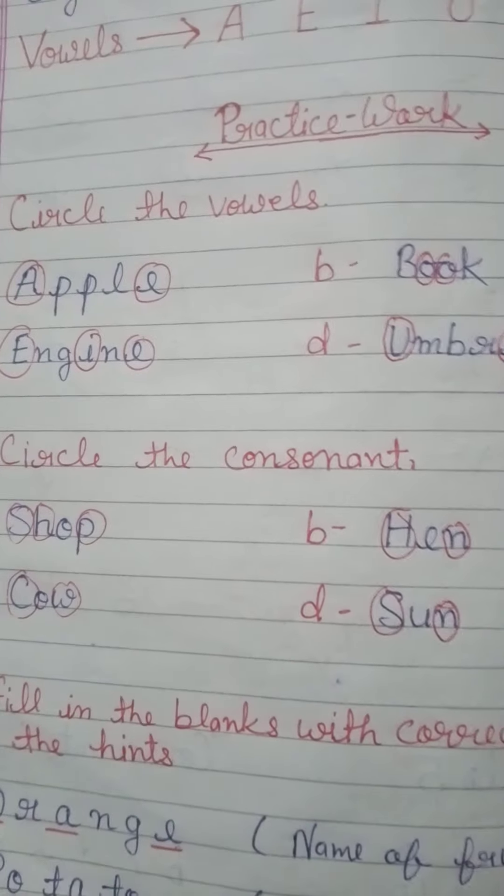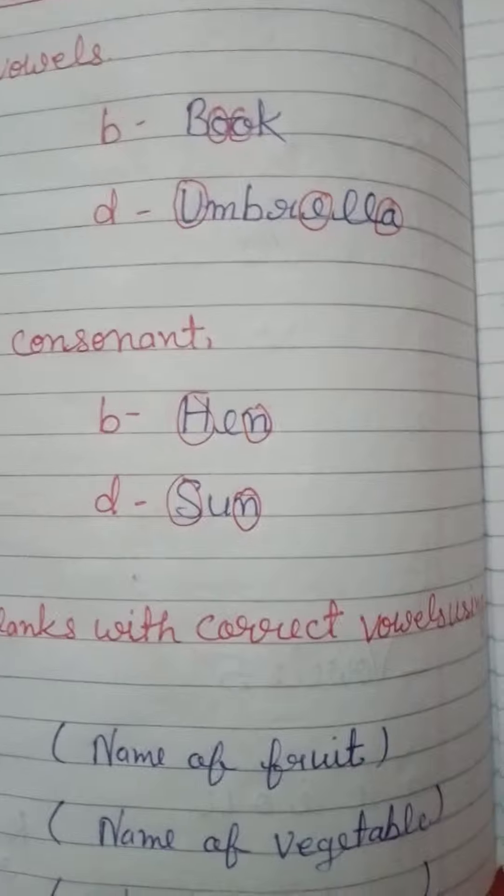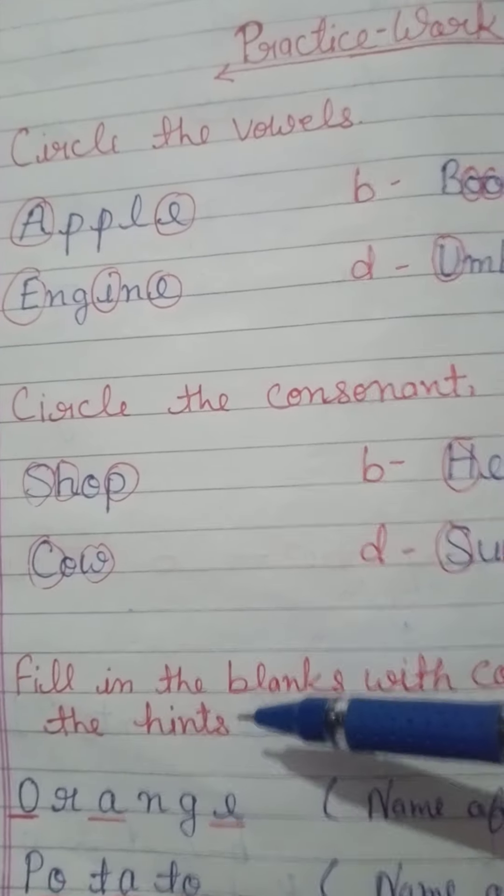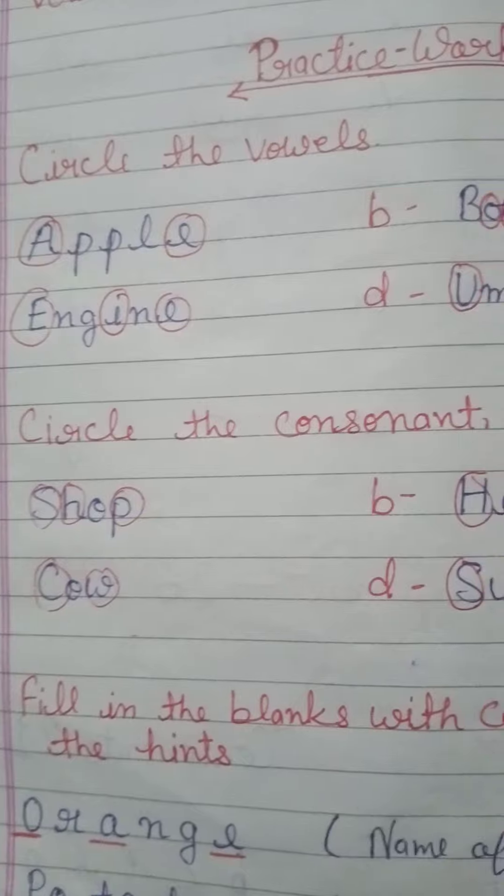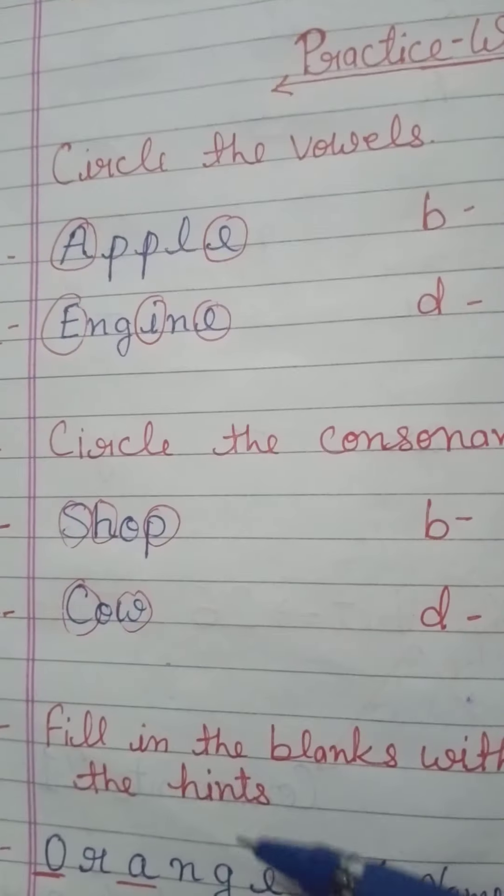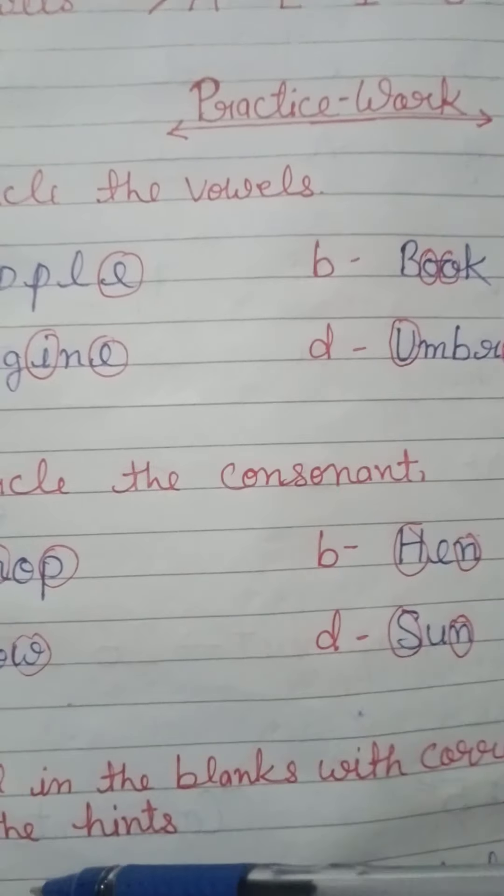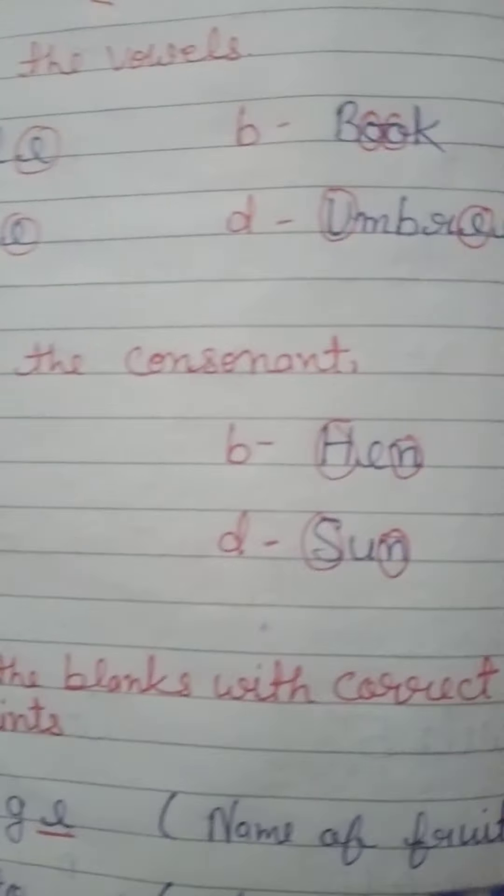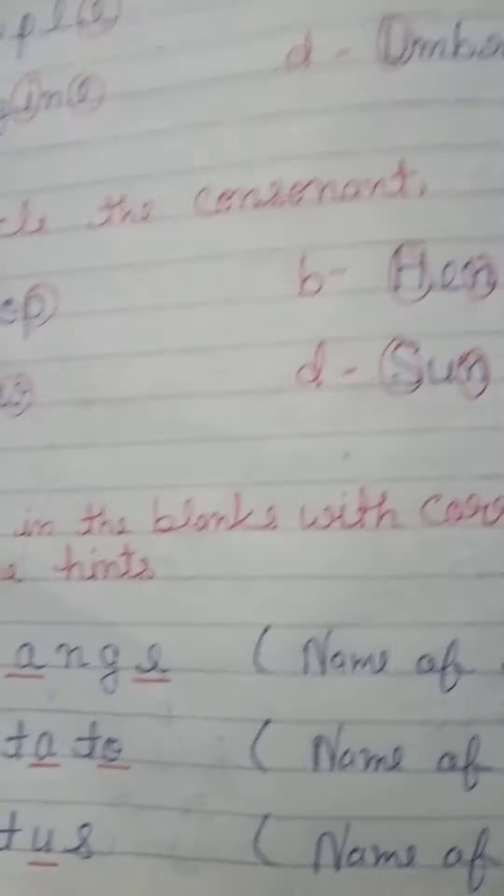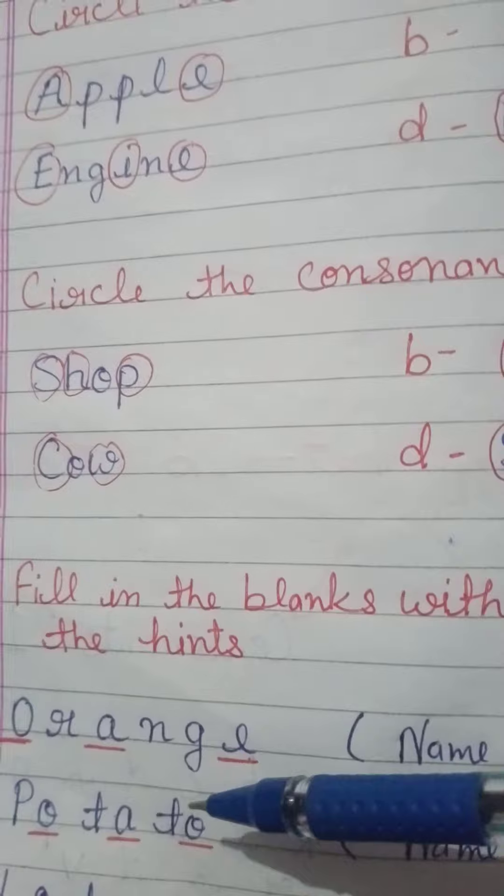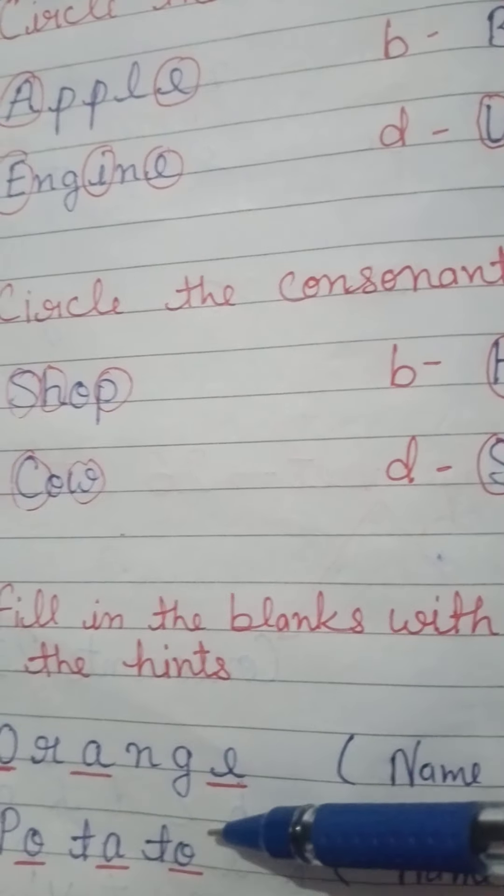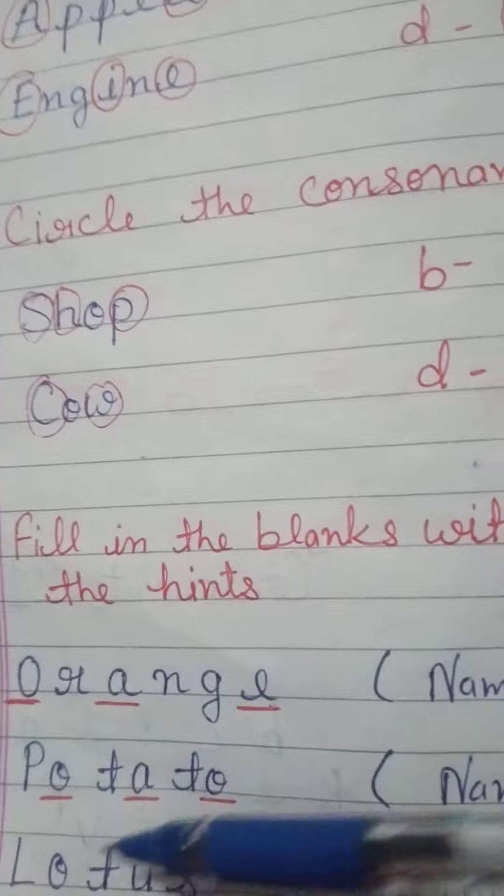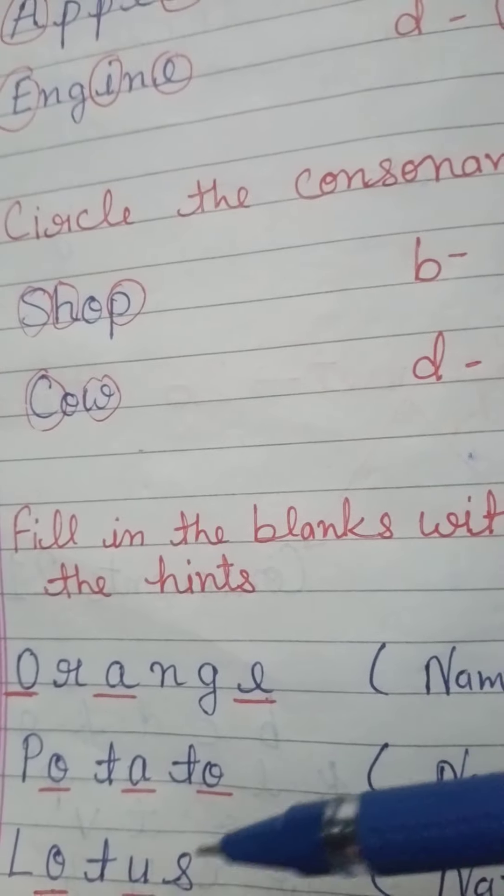Next exercise, see: fill in the blanks with correct vowels using the hints. Here some hints are given, and according to the hints we need to fill the vowels in the words. Name of a fruit: orange. In orange spelling, O, A, and E are vowels which we have filled. Name of a vegetable: potato. We have filled O, A, and O. Lotus: in lotus we have filled O and U, which are the vowels.